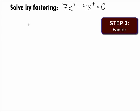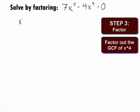In Step 3, we want to factor. If you need a review on factoring, feel free to go to College Algebra Tutorial 7. It looks like we can factor out a greatest common factor of x to the 4th, and when we do this, we get x to the 4th times 7x minus 4 equals 0.